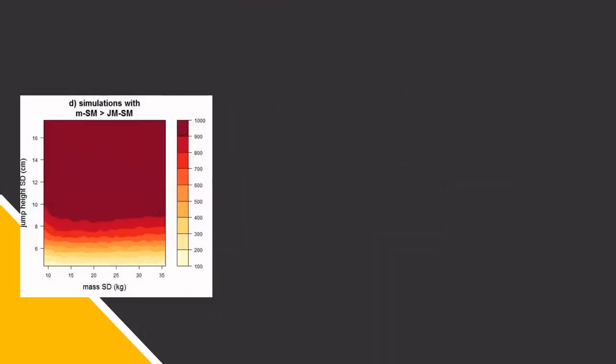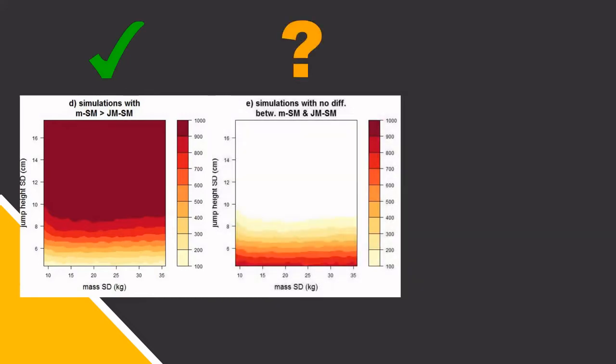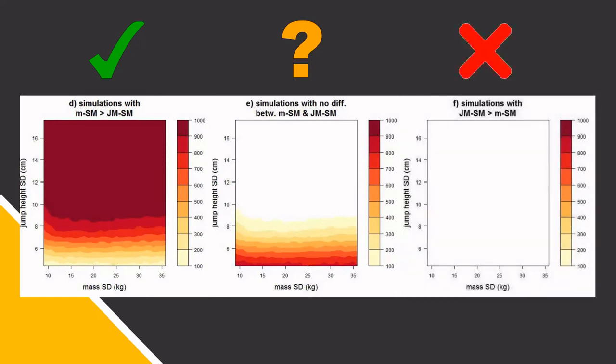There were lots of conditions in which body mass was the best predictor of sprint momentum, a few conditions in which there was no significant difference between the predictors, and no conditions in which jump momentum was the best predictor of sprint momentum.